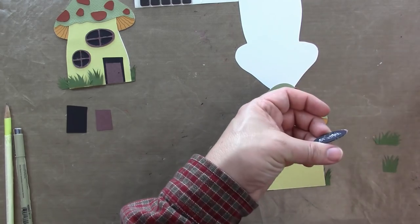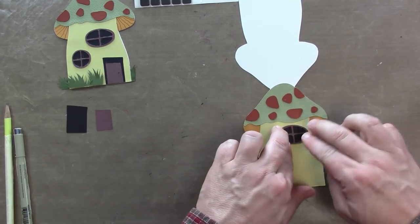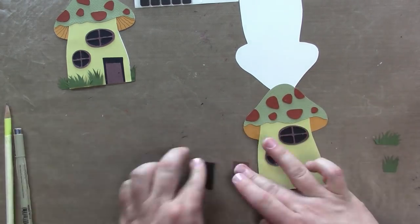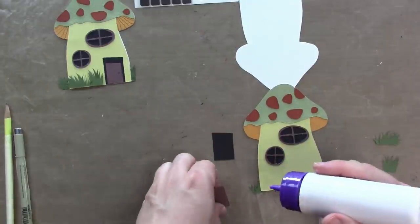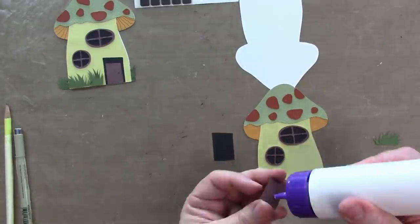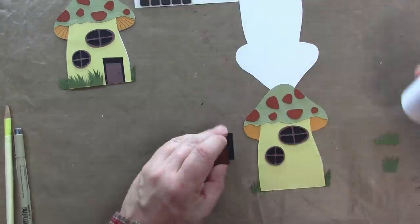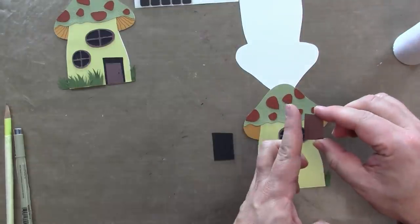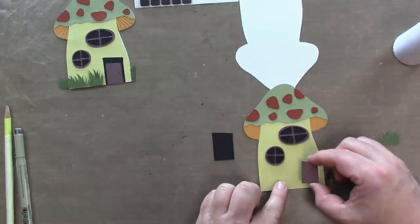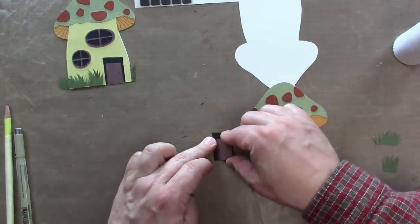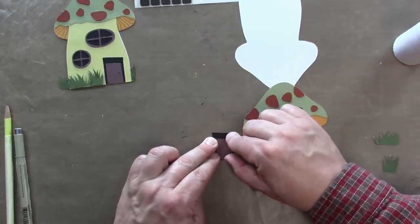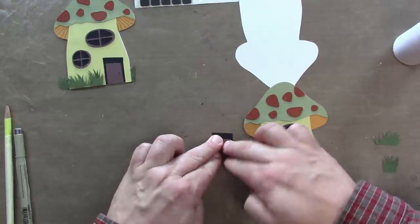Once we have the windows on we can start to work on the door. Now I did a flat door here, but you could always take that door and weld a rectangle to the side of it and make a hinge. And the door could even open and close based on that hinge. But I kept it flat here. I'm just going to put it on the frame and then attach the whole thing to the card.